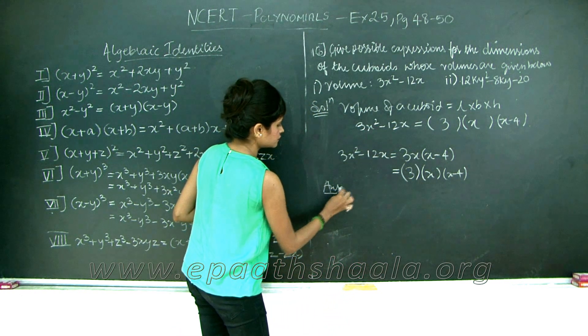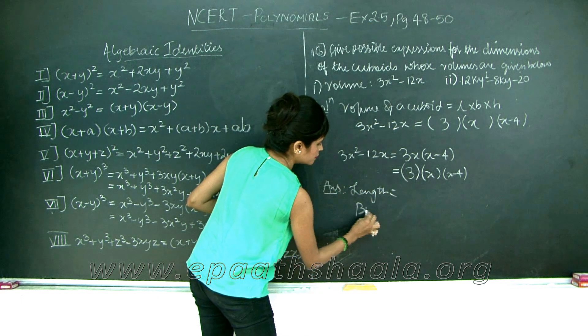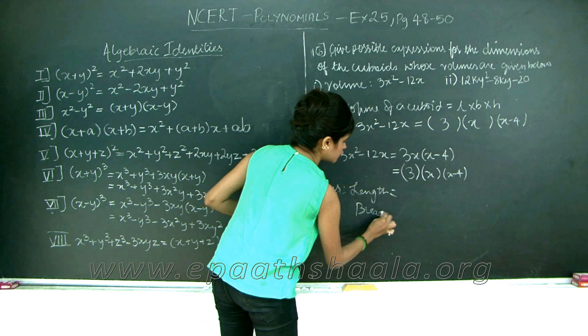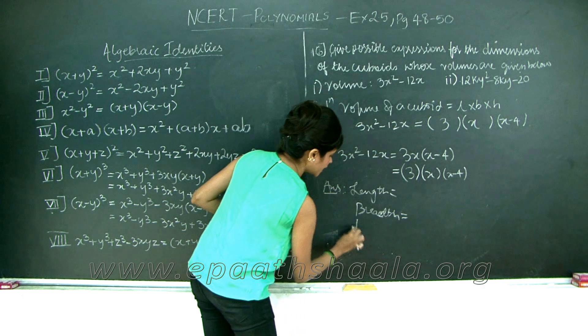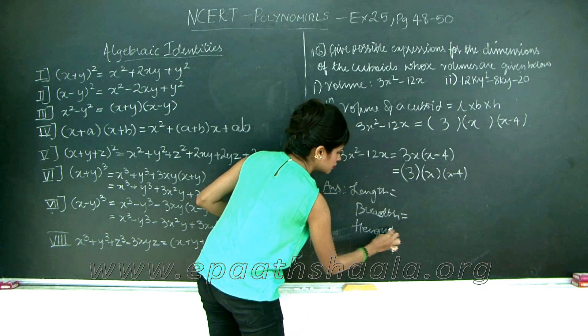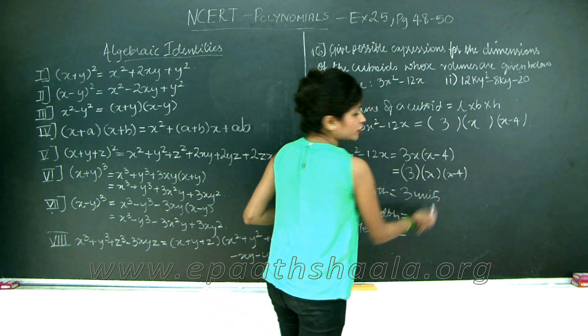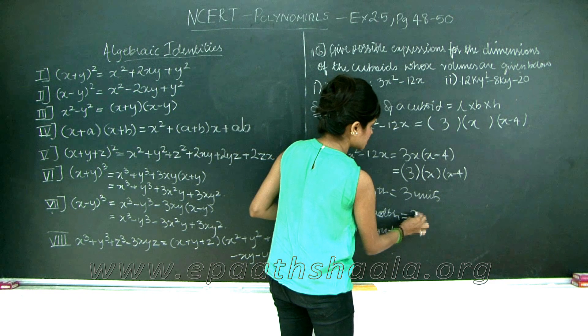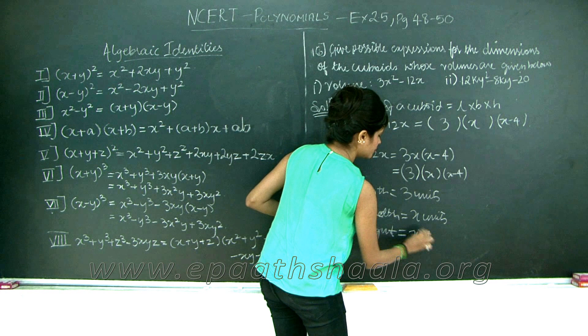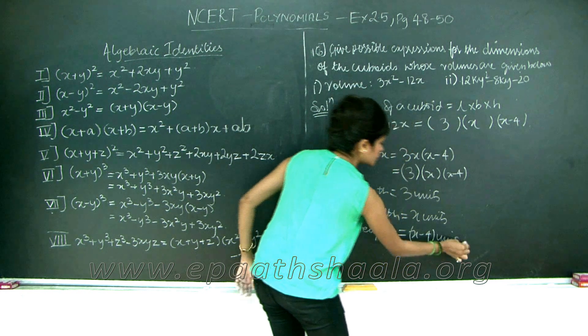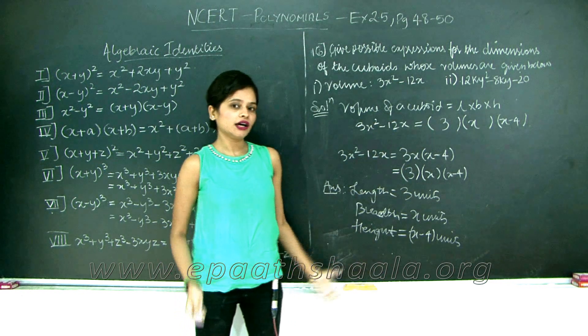Therefore, I will say answer: length is equal to 3 units, breadth is equal to x units, and height is equal to x minus 4 units. Notice the importance of units over here. Do not just leave it as it is. You see how we factorize the polynomial in order to find the dimensions of a cuboid. Let's go ahead and solve the last question.